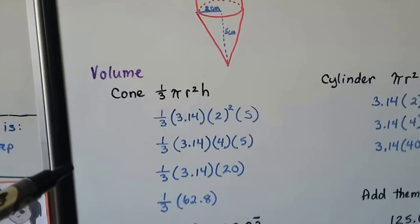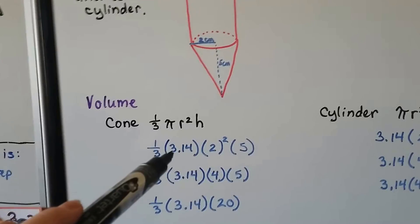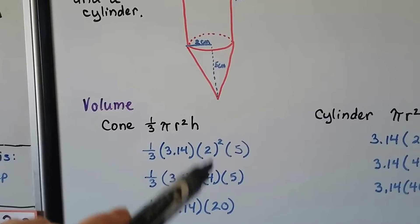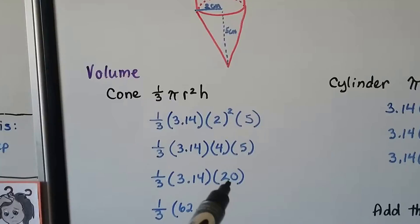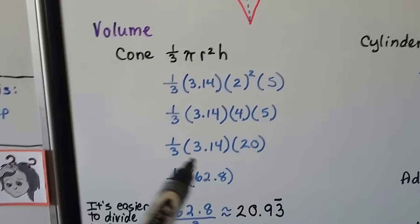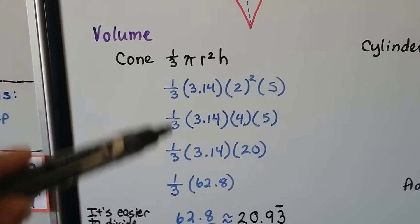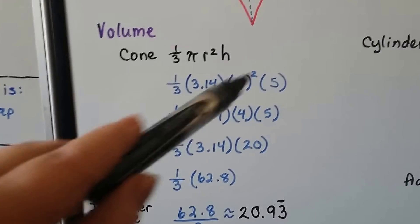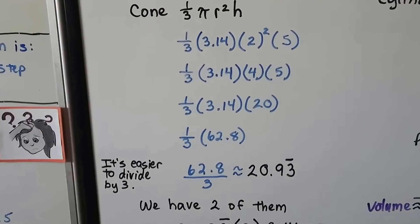So, the volume of a cone is 1 third pi r squared h. That means we have 1 third times 3.14 for pi, times the radius squared, 2 centimeters squared, which is going to give us 4, times that height of 5. The 4 times 5 is 20. 3.14 times 20 is 62.8, and then that needs to be multiplied by a third. Do you notice that I ignored this 1 third and I did all this math over here? Because whenever I see a third, I do this math first, because when you're dealing with a third, it's easier to divide it by 3.